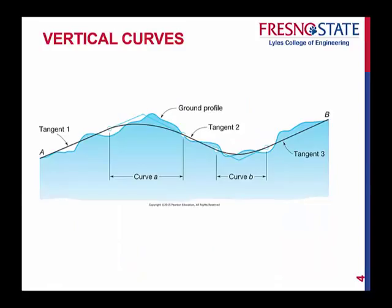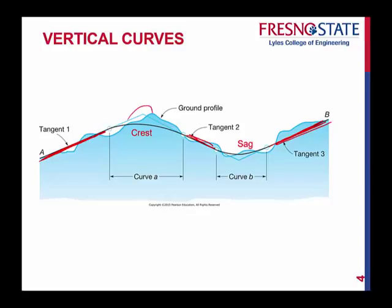So a couple of points to keep in mind here, looking at a side profile view of a center line or reference line. The first type of curve is a crest curve, and the other one is a sag curve. A crest curve is as if you're cresting over a hill going down to the other side. A sag curve is going down into the bottom. What these curves do is connect your tangents. Just as we had tangents in horizontal curves, we have tangents in the vertical plane as well, and we need some sort of curve to connect them, because you obviously can't drive over a sharp angle like that.